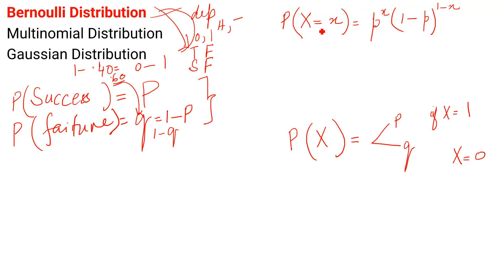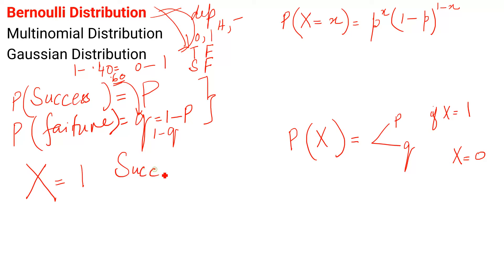In the equation, x is used as a random variable, but if some books use z or y it does not matter — your concept should be clear. As a random variable x: if x equals 1, it means this is the probability of success. If the random variable x equals 0, it means this is the probability of failure.